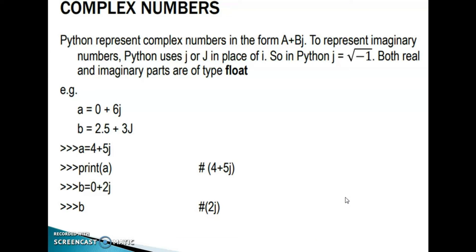Next, complex numbers. Python represents complex numbers in the form a + bj. To represent imaginary numbers, Python uses j or capital J in place of i. In mathematics, complex numbers are written as a + ib with a real part and an imaginary part. But in Python, complex numbers are written as a + bj, where a is the real part and bj is the imaginary part.